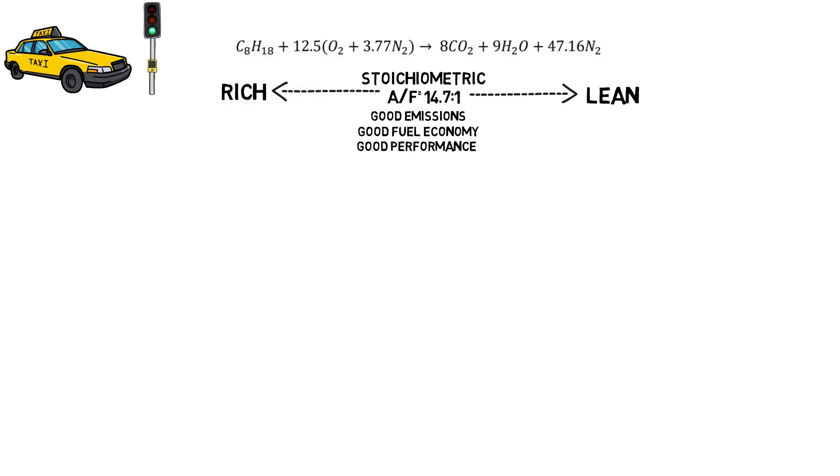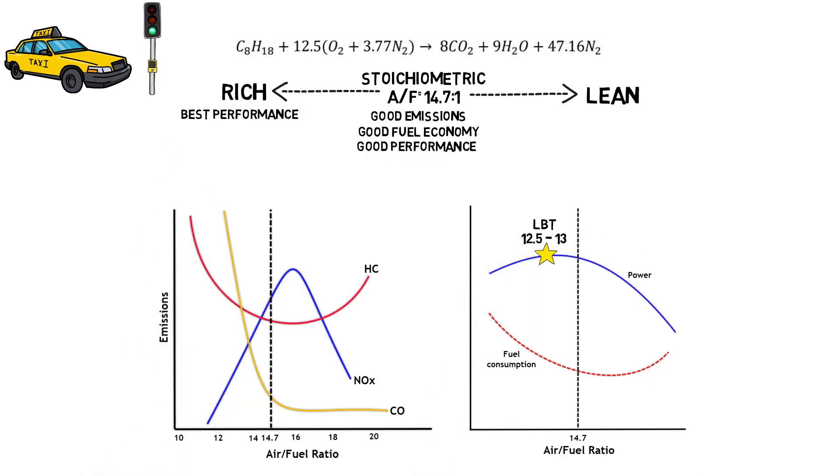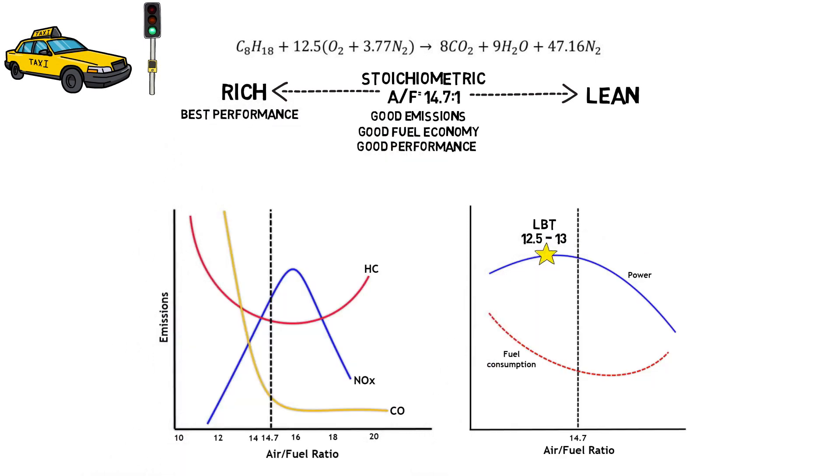Let's use these two charts to support our explanation. For instance, the best ratio for performance, known as Leanest Best Torque or LBT, is on the richer side, typically between 12.5 and 13. This occurs because rich combustion burns faster and pressure is built quicker. Therefore, air-fuel ratios in this range are very popular at the WOT area.